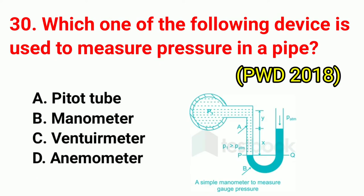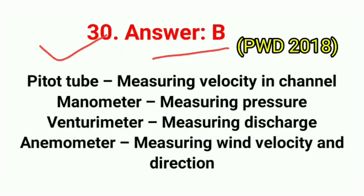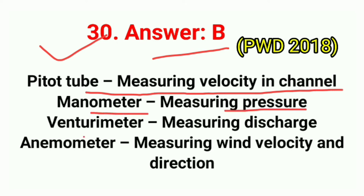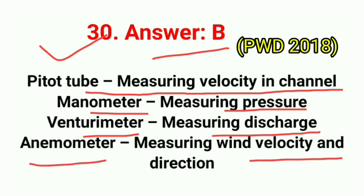Question No. 30. Which one of the following devices is used to measure pressure in a pipe? Correct answer is option B: manometer. Pitot tube measures velocity in a channel; manometer measures pressure; venturimeter measures discharge; anemometer measures wind velocity and direction.